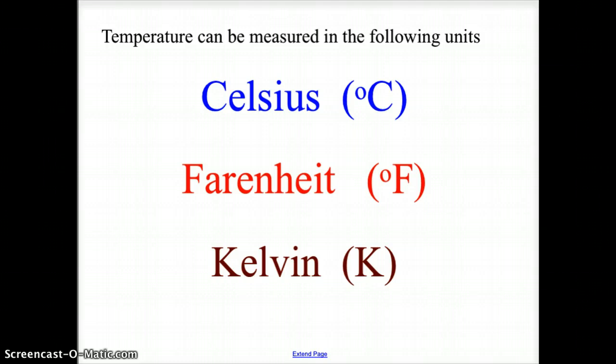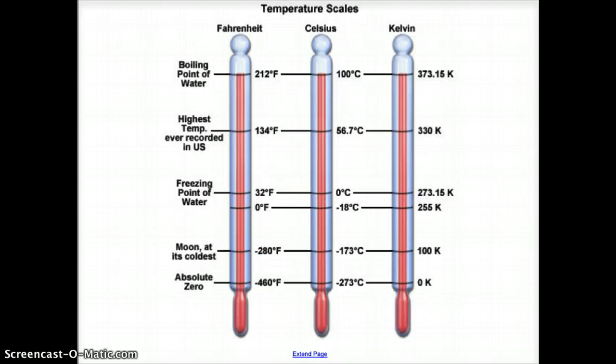Let's look at these three scales and see how they differ and how they may be the same. On the left we have Fahrenheit. Water freezes at 32 degrees Fahrenheit, and it boils at 212 degrees Fahrenheit. We use water because water is the universal solvent, it is the most abundant substance on Earth, and it has a very high specific heat, which means it takes a lot of energy to change the degrees of water up and down.